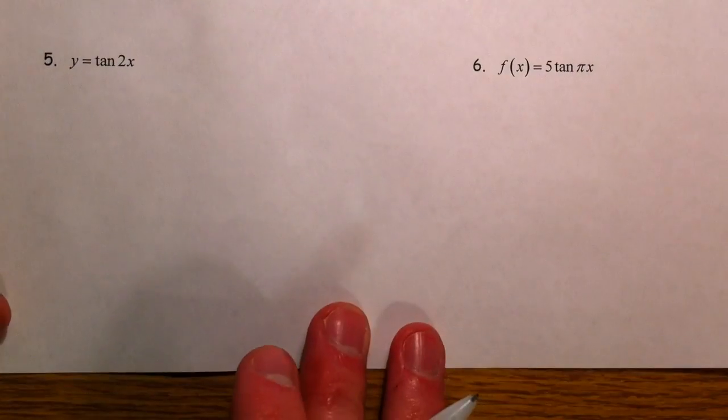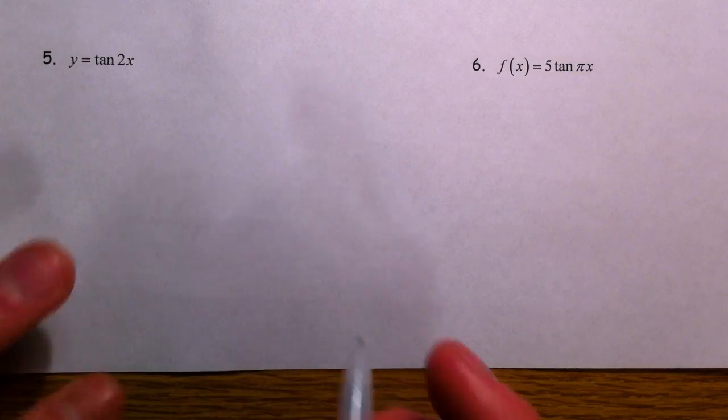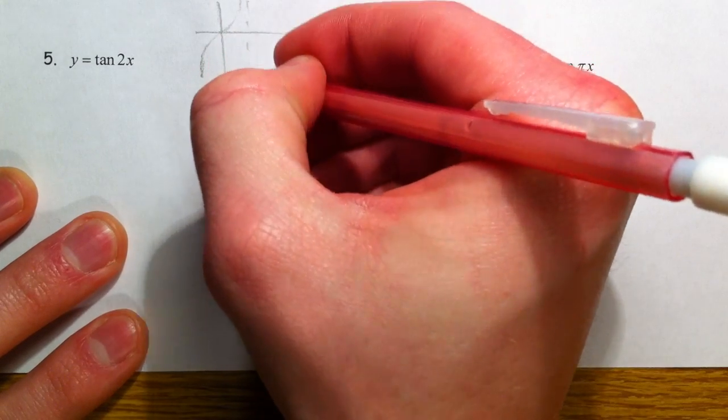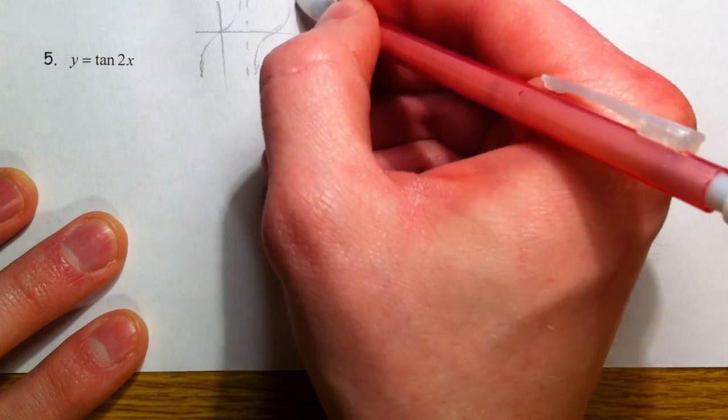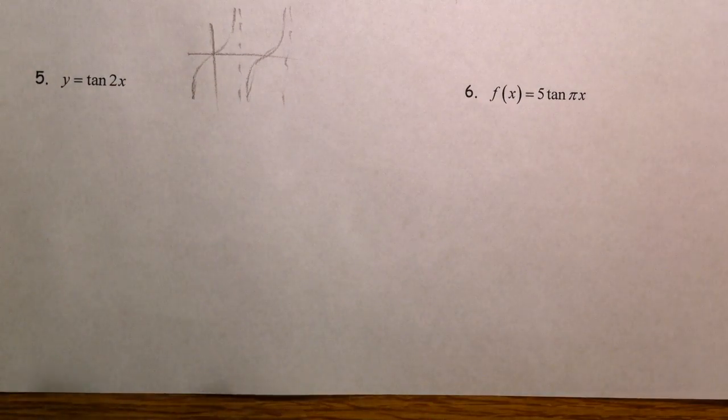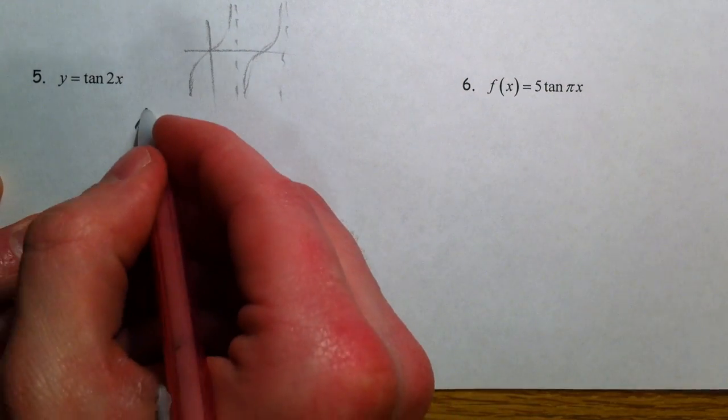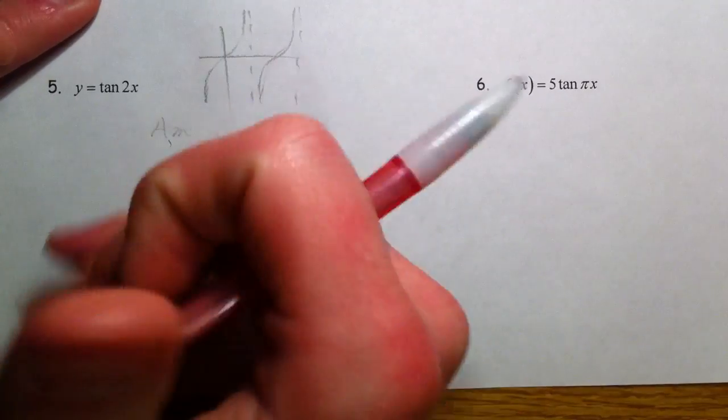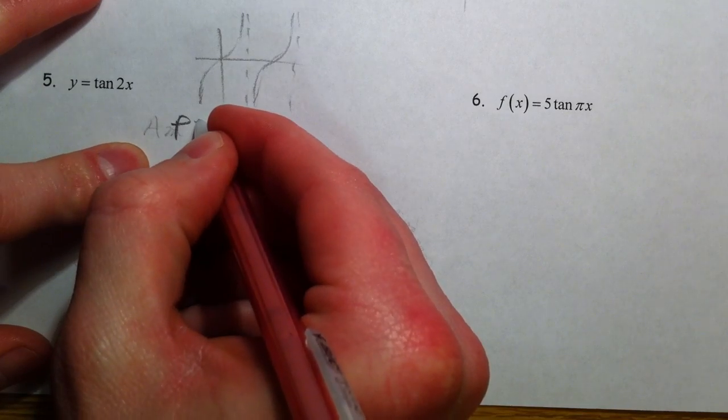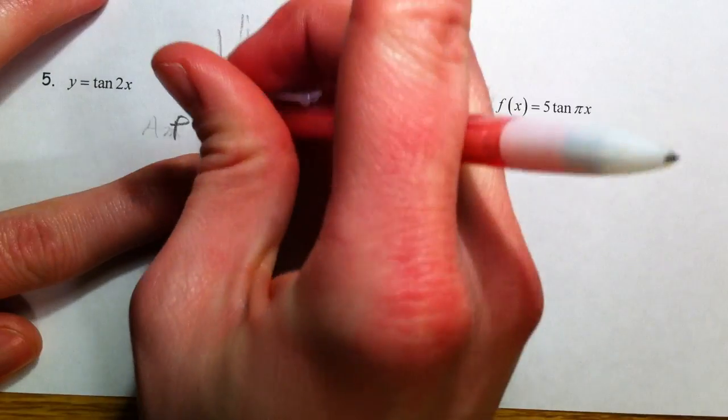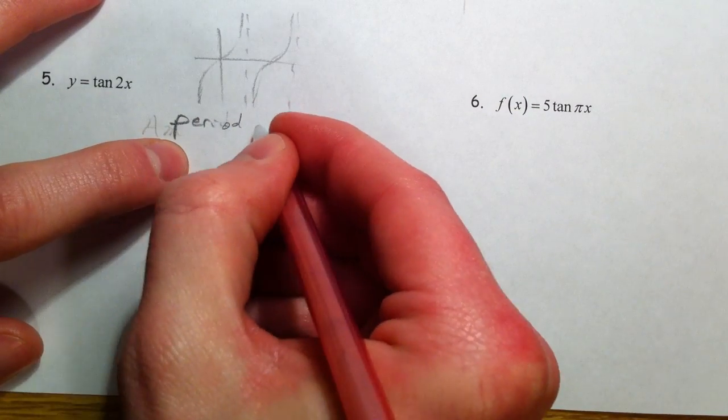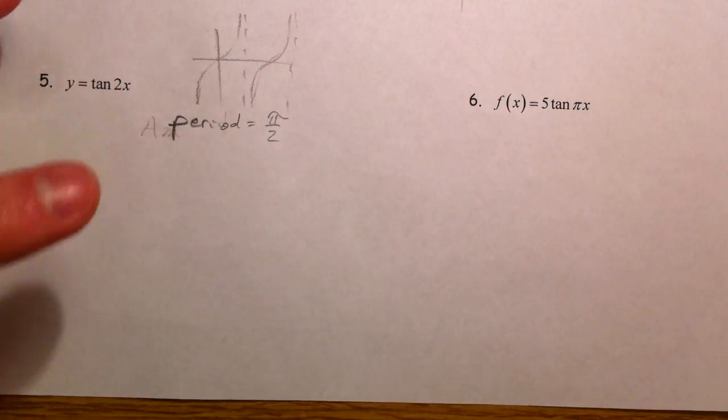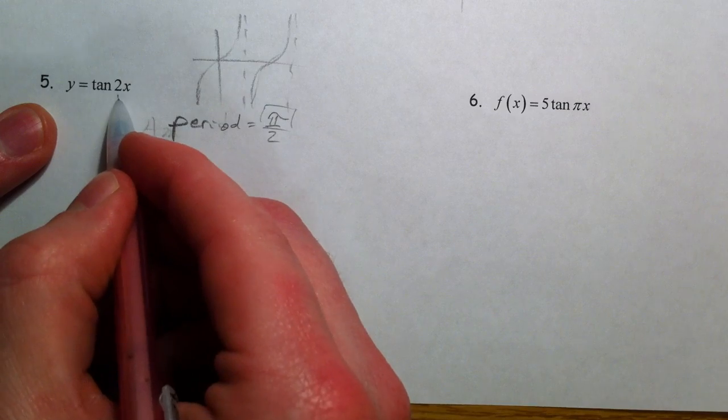Now, on to tangent. Tangent we saw as this general curve where we had the asymptotes. Keep that in mind. And the period for tangent was π originally. And so amplitude for this one is going to be non-existent. Tangent doesn't have an amplitude. But the period is going to be π divided by 2. Period is going to be π divided by 2. The original one π divided by the 2 out in front.